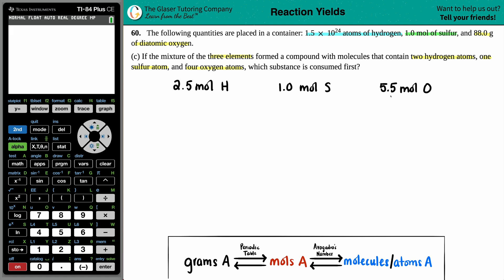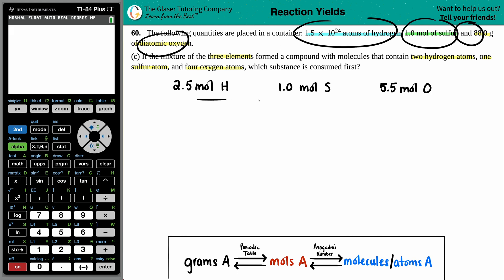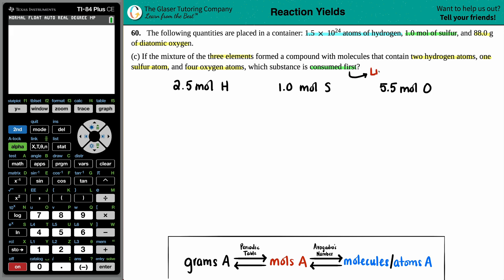We have 2.5 moles of hydrogen, one mole of sulfur, and 5.5 moles of oxygen. These values were found in 60B. If you want to find out how we went from these values to moles, go back to 60B — that's where I explain them. For this part, we want to find out which substance is consumed first.